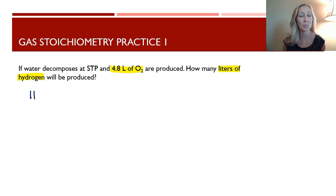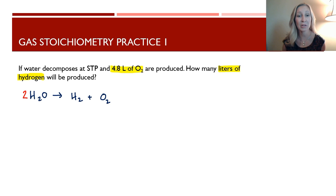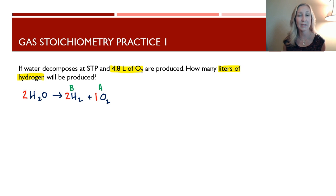Let's write out the balanced equation. Water is decomposing: H₂O decomposes into H₂ and O₂. To balance it, two water molecules break down into two hydrogen molecules and one oxygen molecule. I'm putting the one in so the ratios are easy to see. I'll label the gases: oxygen is given, so oxygen is gas A, and hydrogen is what we want to find, so hydrogen is gas B.